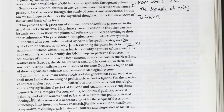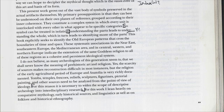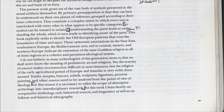I do not believe, as many archaeologists in this generation seem to, that we shall never know the meaning of prehistoric art and religion. The scarcity of sources makes reconstruction difficult in most instances, but the religion of the early agricultural period of Europe and Anatolia is very richly documented. Tombs, temples, frescoes, reliefs, sculptures, figurines, pictorial paintings, and other sources need to be analyzed from the point of view of ideology. For this reason, it is necessary to widen the scope of descriptive archaeology into interdisciplinary research. I lean heavily on comparative mythology, early historical sources, linguistics, as well as folklore and historical ethnography.